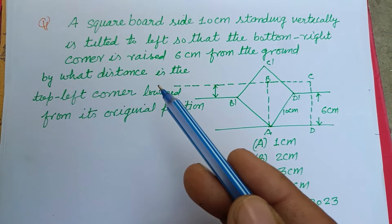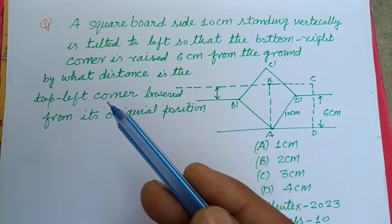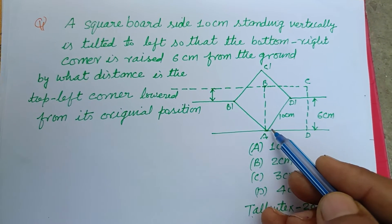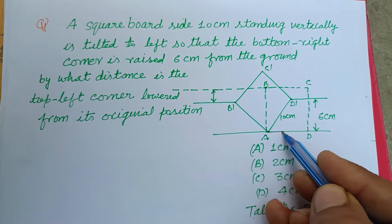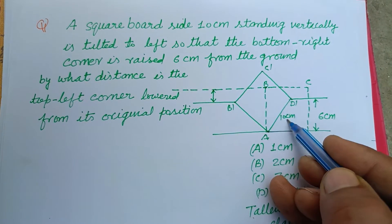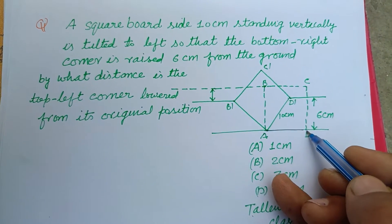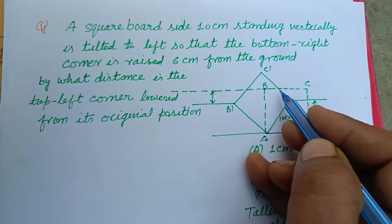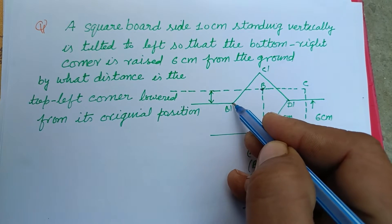By what distance is the top left corner lowered from its original position? So here, this part is raised 10 centimeter, and 6 centimeter from D, so this is 6 centimeter. Question is asking that this B part is lowered.